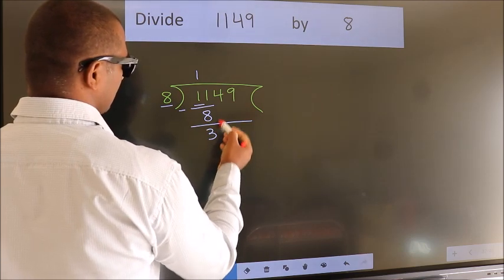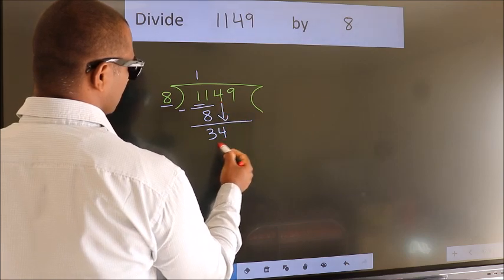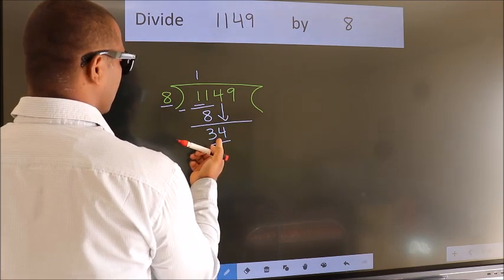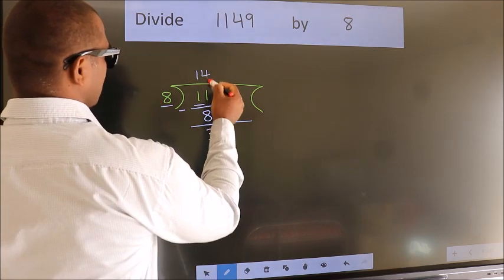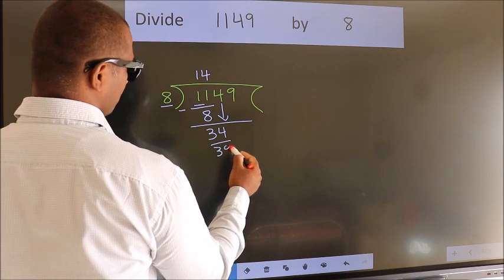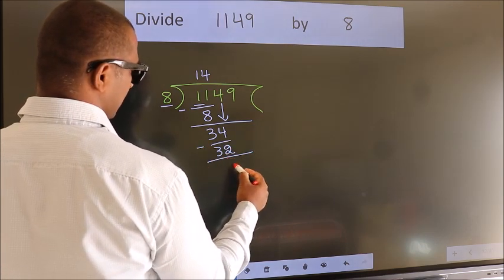After this, bring down the beside number. So, 4 down. So, 34. A number close to 34 in 8 table is 8 fours 32. Now, we subtract. We get 2.